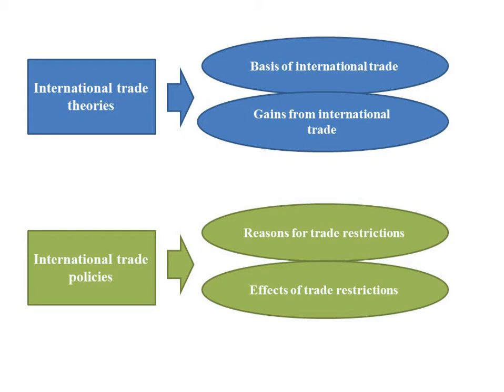International trade policy explains why countries doing international trade need trade restrictions — basically why a country needs protection from international competition. Besides this, international trade policy discusses how trade restrictions affect the domestic as well as the world economy. Tariff, quota, and subsidy are some common examples of international trade restrictions.